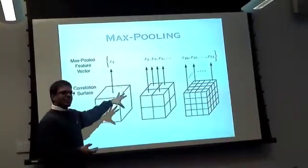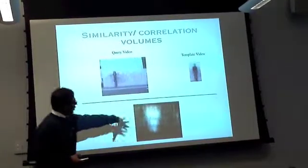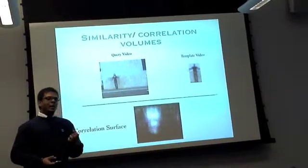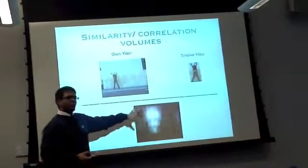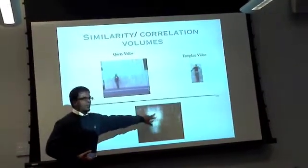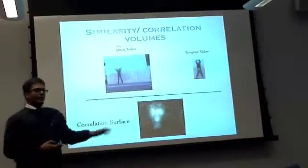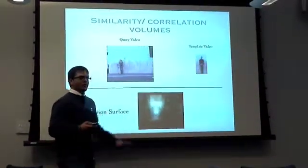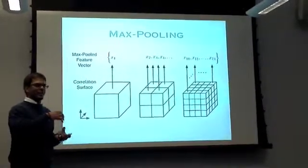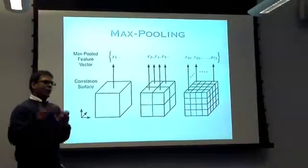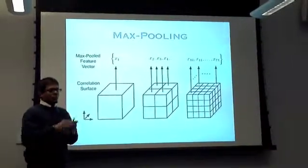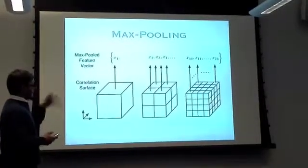Basically what's happening is that in the whole of this correlation volume, I am picking only those values which contribute to a maximum extent — those that convey the most about the similarity between the template and the query video. Everything else that's superfluous gets discarded. Max pooling is a simple method to pick out the most contributive values in the correlation volume.